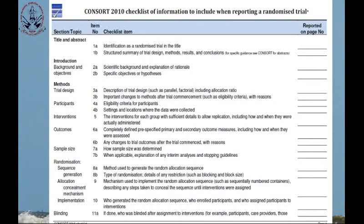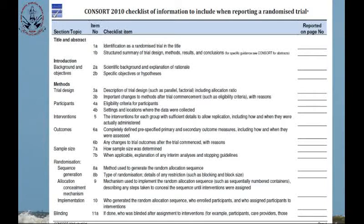For sample size, how the specific sample size was determined must be stated. When applicable, an explanation of any interim analysis and stopping guidelines is required. For randomization, they clearly require methods used to generate the random allocation sequence, types of randomization, and details of any restrictions such as blocking and block sizes. For allocation, the mechanism used to implement the random allocation sequence — such as sequentially numbered containers — must be described, along with any steps taken to conceal the sequence until interventions were assigned.